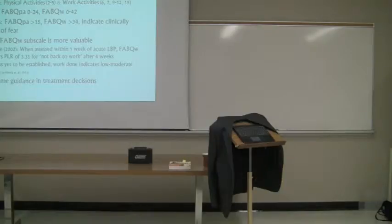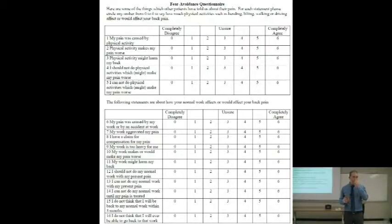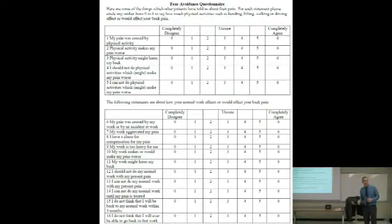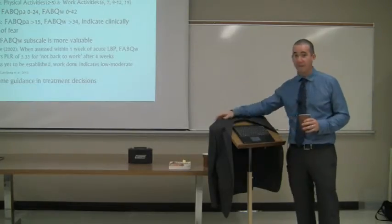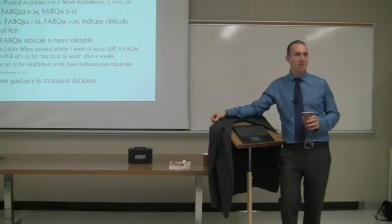In the work subscale, there's one item that is especially prognostic for trying to predict return to work — one single, very prognostic item. Which one do you think it is? 'I don't think I'll go back to work.' So either 'I don't think I'll go back to work within three months,' or 'I don't think I'll ever be able to go back to work.' That single question — do you think you'll be back to work in X number of months — is probably as prognostic as the rest of the entire scale. You could probably get away with just that one question.